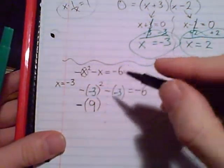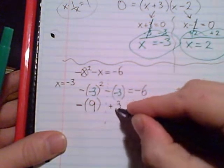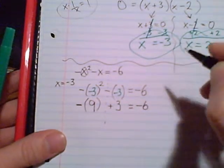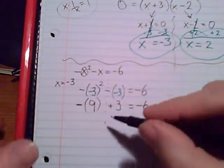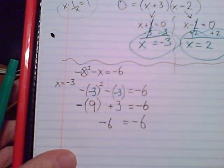Minus negative three. Let's just turn that to a positive. Minus negative, I like to right away turn that into a positive or an add. Negative nine plus three, that's a negative six. Those equal negative six, so x equals negative three checked out.